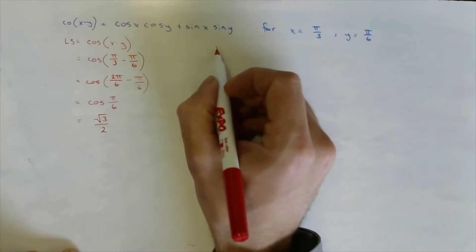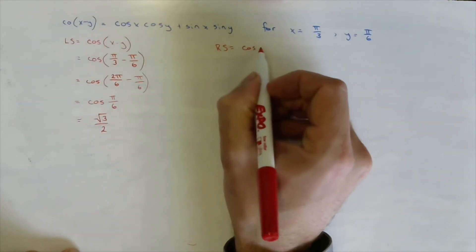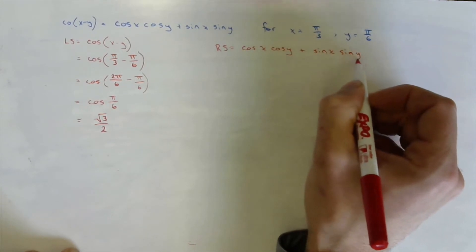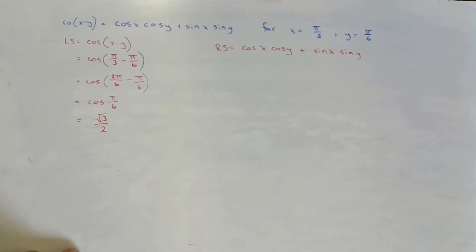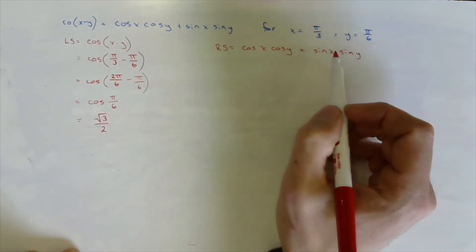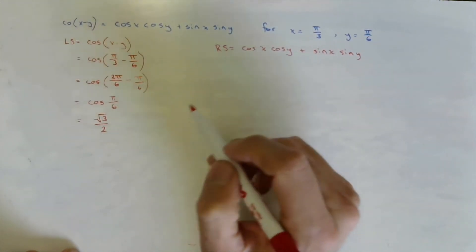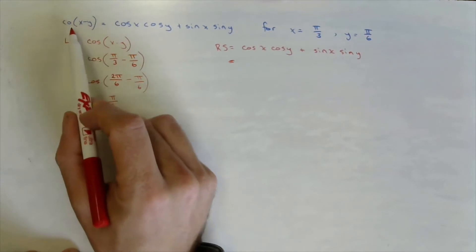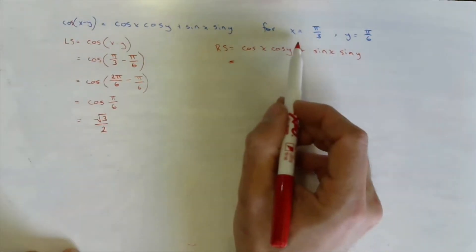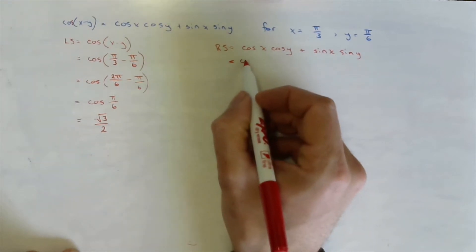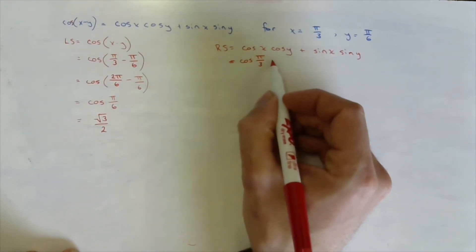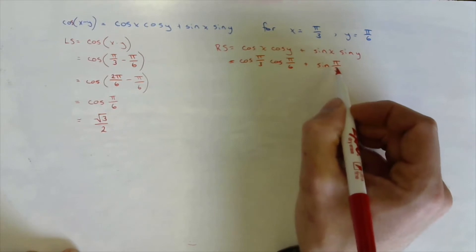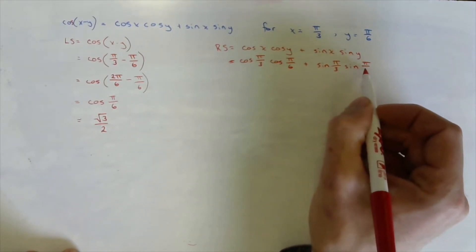Now we take the right side — cosine of x times cosine of y plus sine of x times sine of y — and do the same thing: substitute in the specific values given for x and y. If we come out with the same value as we did on the left side, then we know they are equal, and the subtraction formula for cosine holds true for these specific angles. So we have cosine of pi over 3 times cosine of pi over 6 plus sine of pi over 3 times sine of pi over 6.